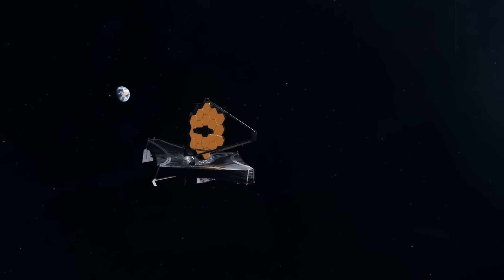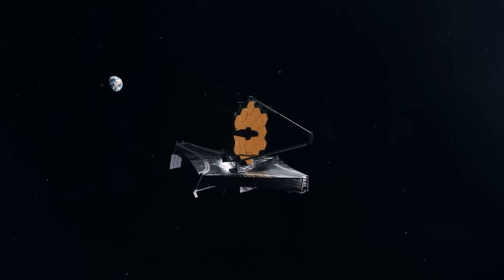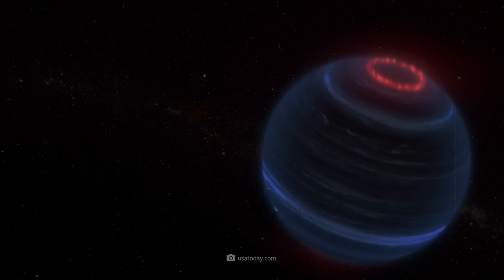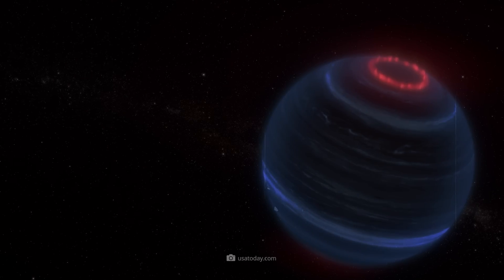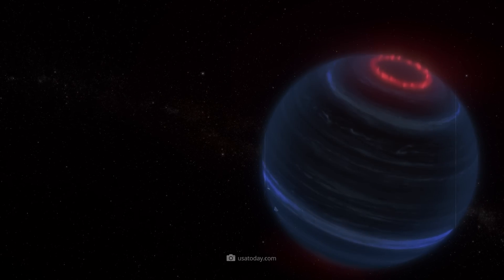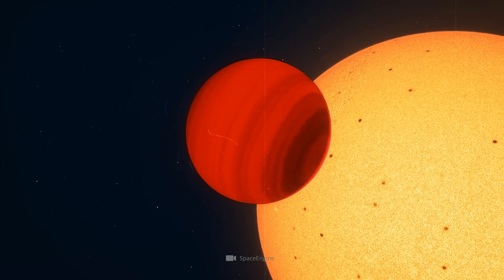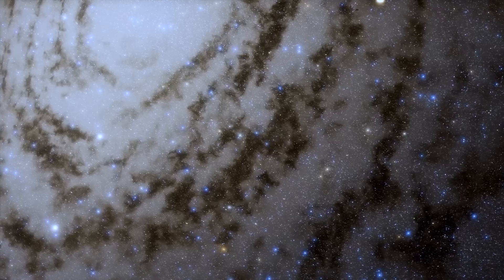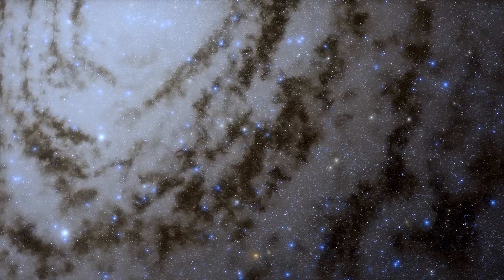The James Webb Space Telescope has discovered an aurora around a brown dwarf that is over 40 light-years away from Earth. This discovery, called W1935, is special not only because this brown dwarf is luminous, but also because it is close to other stars. Normally, brown dwarfs appear in isolation.